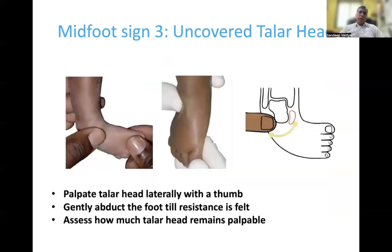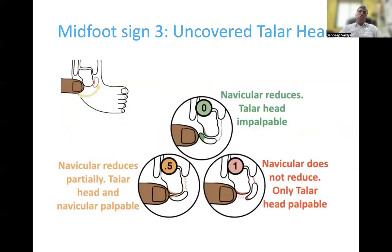The third midfoot sign is the uncovered talus head. To assess this sign, palpate the talus head by first palpating the lateral malleolus and moving your thumb anteriorly to feel the uncovered talus head. With the other hand, hold the forefoot and abduct the foot so that the talonavicular joint is maximally reduced. In the maximally reduced position, assess how much of the talus head remains palpable. If the talonavicular joint completely reduces, the talus head will completely disappear and you will only palpate the navicular — that gets a score of 0. If there is partial reduction, your thumb will palpate both the talus head and the navicular — score 0.5. If the joint is completely irreducible, you will only feel the uncovered talus head — score 1.